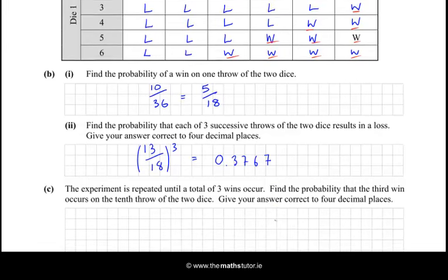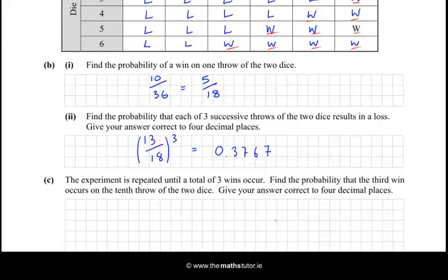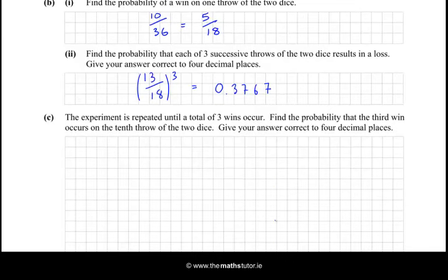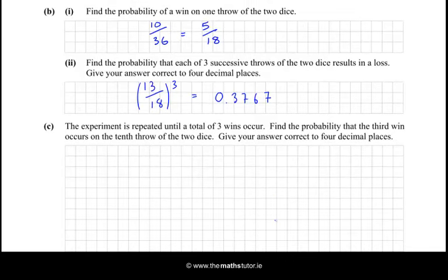So let's find the probability of 2 wins in the first 9 throws and then we'll include the probability of a win on the 10th throw. So first of all we want the probability of 2 wins from the first 9 throws. And that's going to be using the binomial distribution or Bernoulli trials. So if you go to the stats section, which is page 33 of your tables.